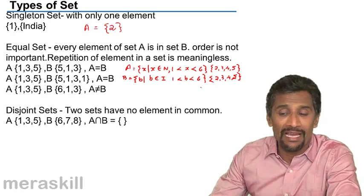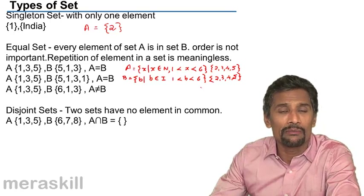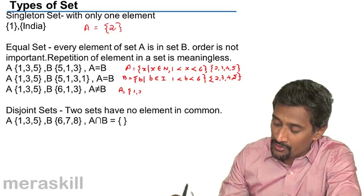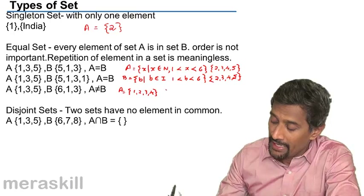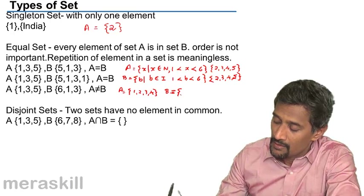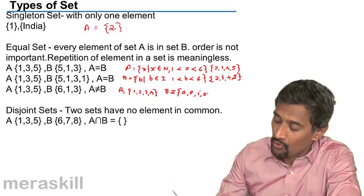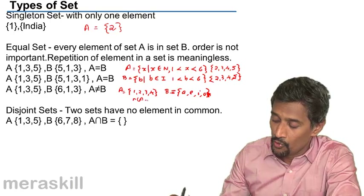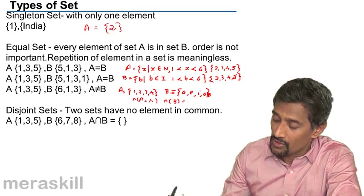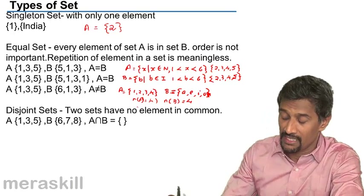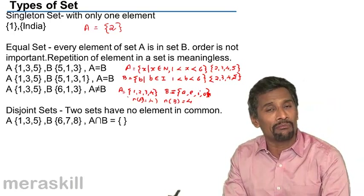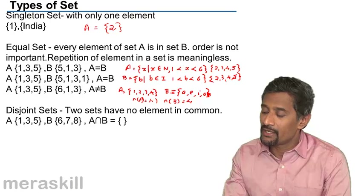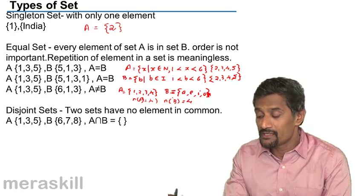There is also the concept of equivalent sets — two sets which are not equal but have the same number of elements. For example, A is {1, 2, 3, 4} and B is {a, e, i, o} — n(A) is 4 and n(B) is also 4. Two sets with the same cardinal number are called equivalent sets. Whenever two sets are equal they are equivalent, but when two sets are equivalent they need not be equal.